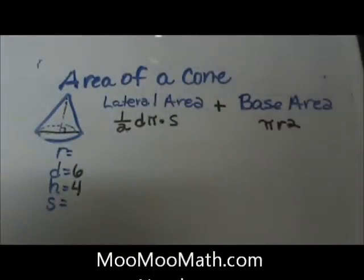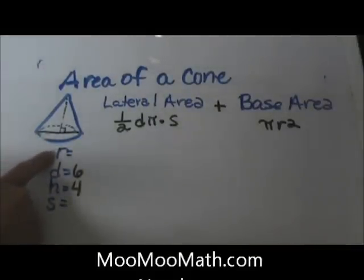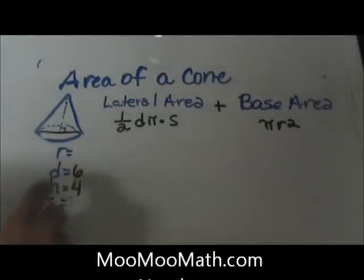So you're going to need to know some information. Let's look at the cone. We need to know the radius and a slant height in our formula. But in this example we're going to be given a diameter and a height. So let's look at how you find the other parts.